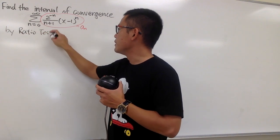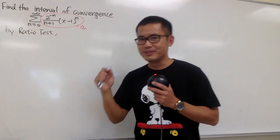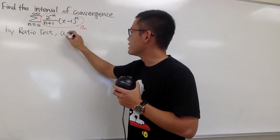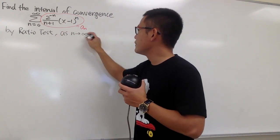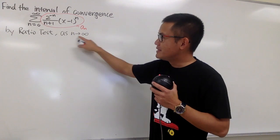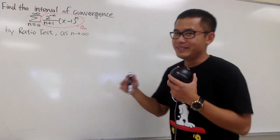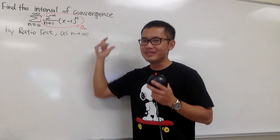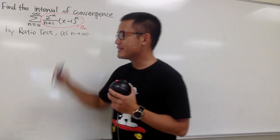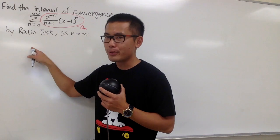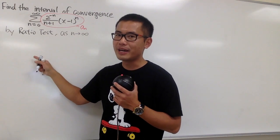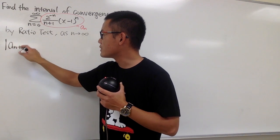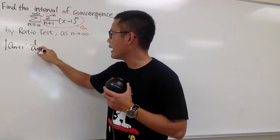By the ratio test, we know that the first step is to take the limit as n goes to infinity. If you write this down this way, you don't have to write down the limit sign so many times — this is also legitimate. For the ratio test, we know we have to do the absolute value of a_{n+1} over a_n, which is the same as the absolute value of a_{n+1} times 1 over a_n.